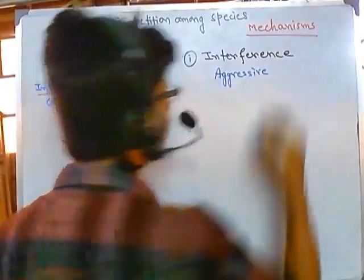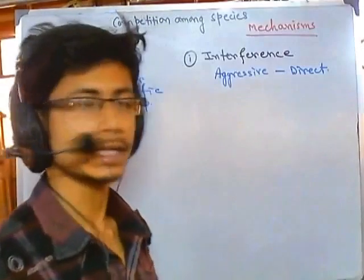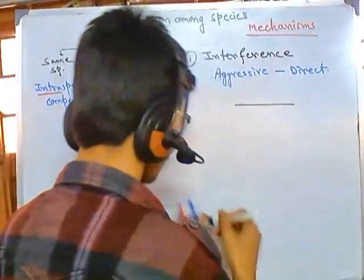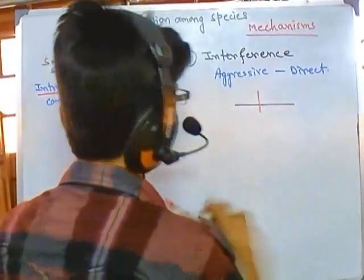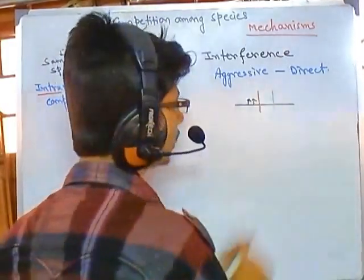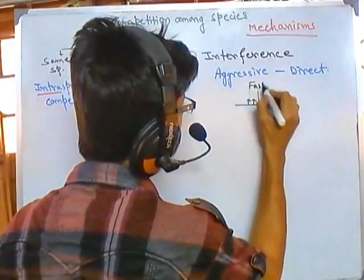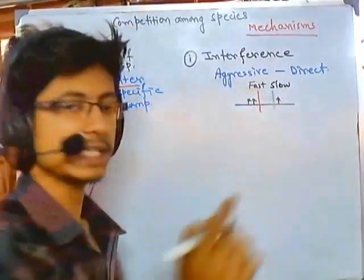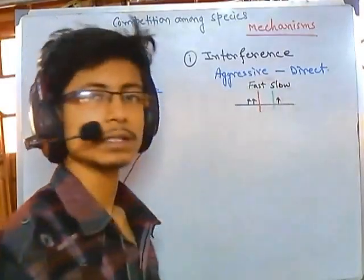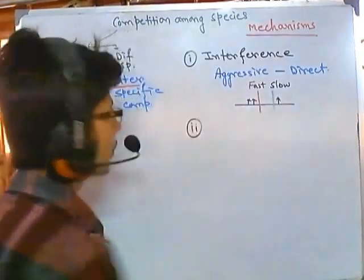The first type is interference competition. This kind of competition is aggressive in nature and is a direct type of competition. For example, two trees are planted in the same region. The red one has a higher ability to take up nutrients from the soil, while the green one has less affinity for soil nutrients. As a result, the red one grows fast and suppresses the growth of the nearby plant. This is interference-type competition.